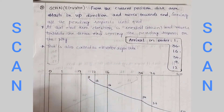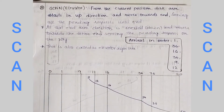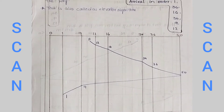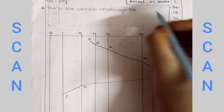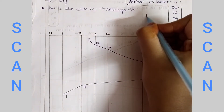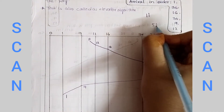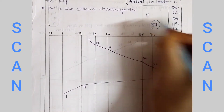In the first example, we are going to perform this algorithm. Our request is here. First, the current position is 11. Total cylinders is 51.